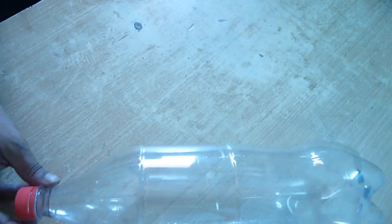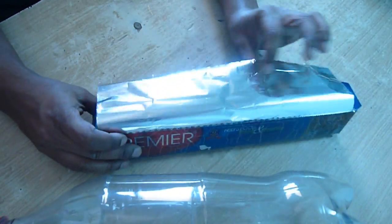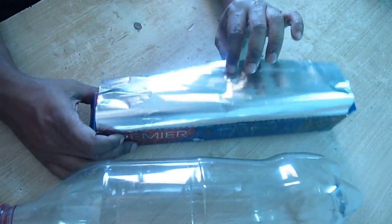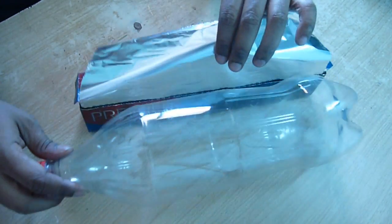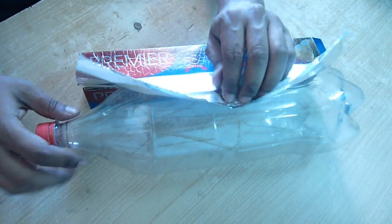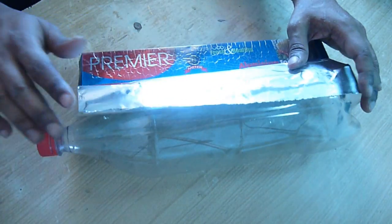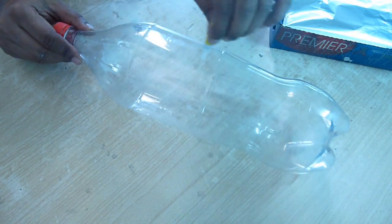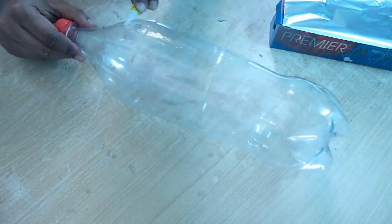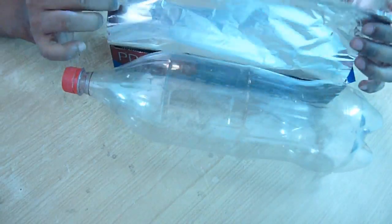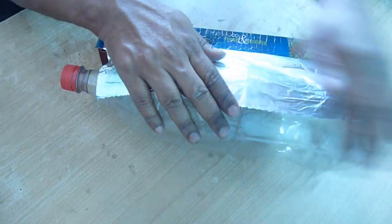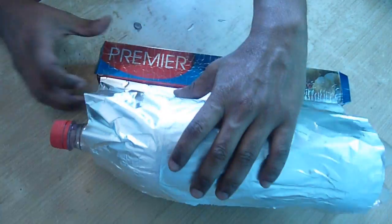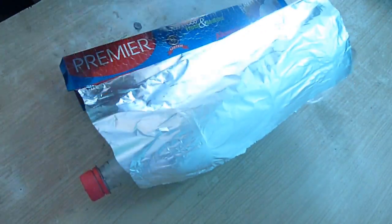This is kitchen aluminum foil, so fold it like this. Put glue and just wrap the aluminum foil on half of the bottle.